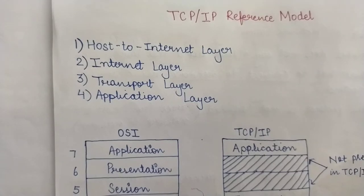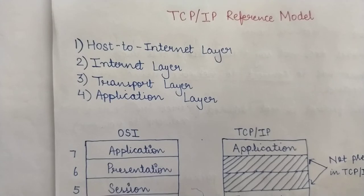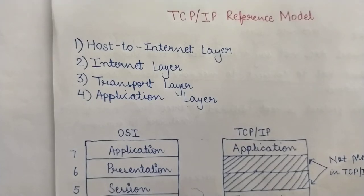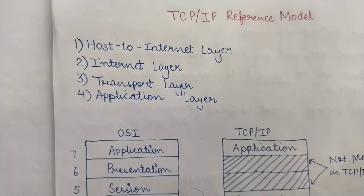Hi all students. Today's video is a continuation of our previous video wherein we were studying the reference models. There are two example reference models: one is the OSI reference model, also known as the Open System Interconnection model, and the second is the TCP/IP reference model, also known as the Transmission Control Protocol Internet Protocol model. So let's look into the layers of the TCP/IP reference model today.